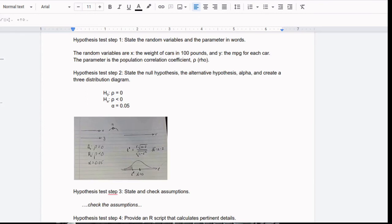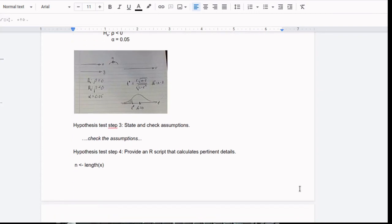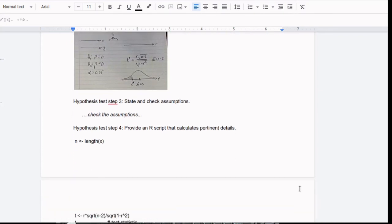Step three in a hypothesis test is to check the assumptions. This is really an important issue. But to keep this video short enough, we're going to skip those details. So let's go on to step four, which is to provide an R script calculating the pertinent details. So let's slide over to our R script.